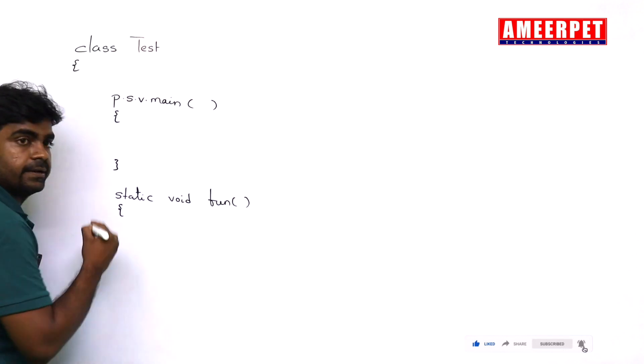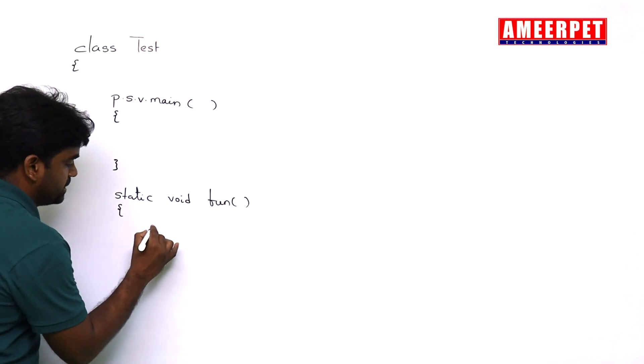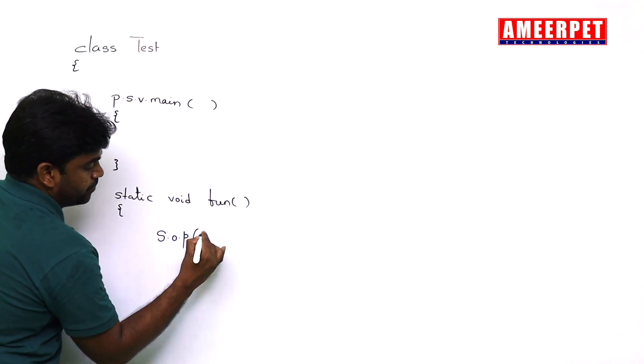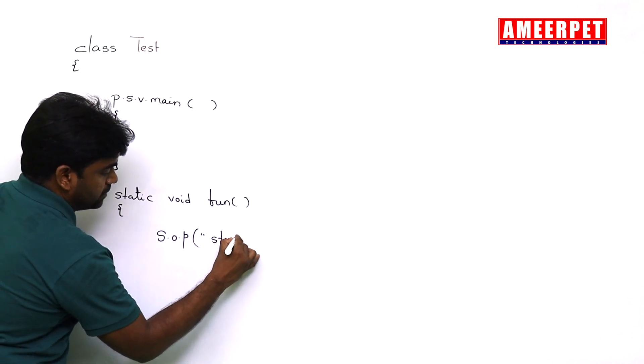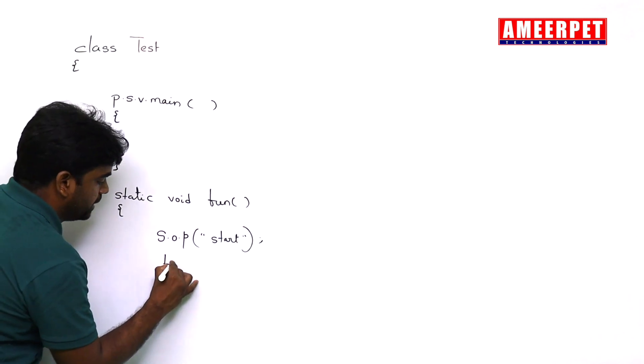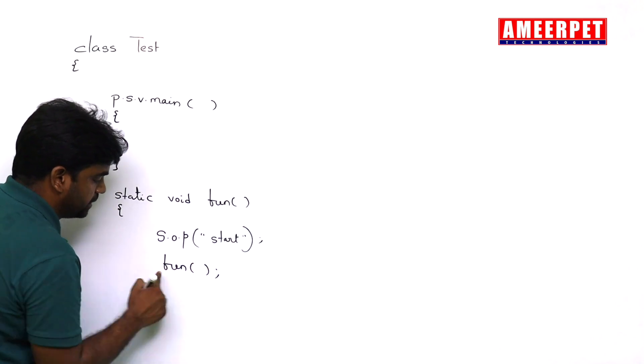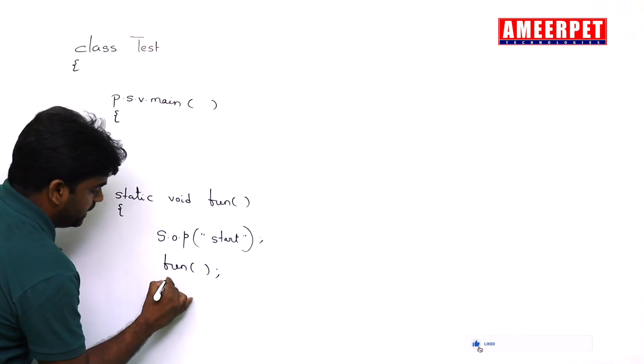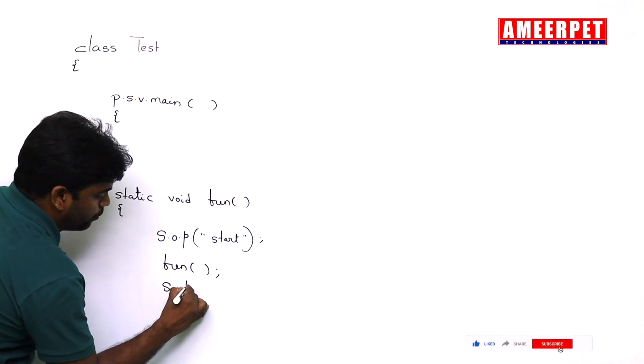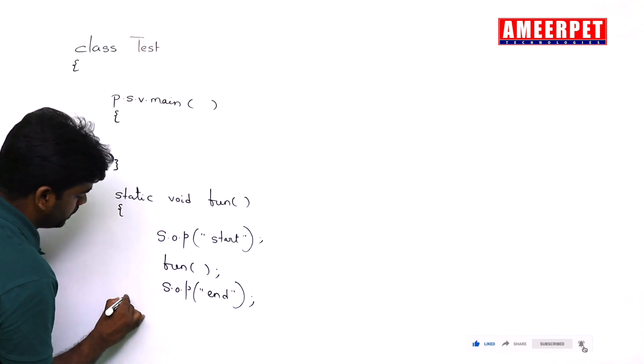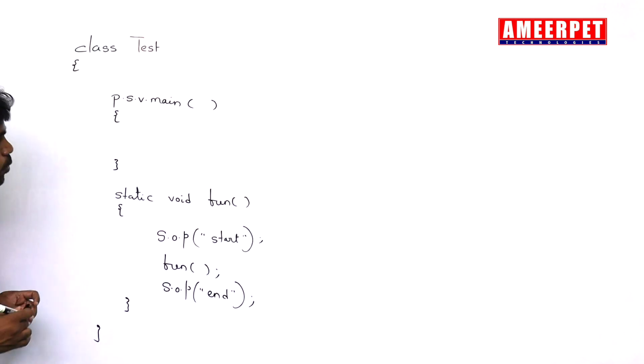A method, we are taking this one with a message, system.out.println, just start. Next, I am calling the method from the same method. This method is called recursively calling. And then here we are writing one more statement called end of this method. Suppose I have written a small code like this.